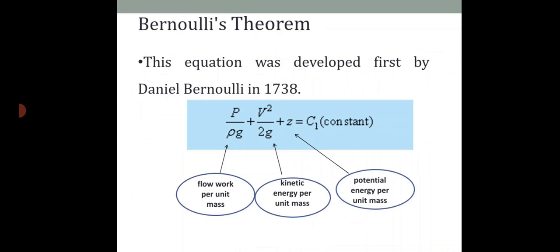Additionally, the flow should be ideal, meaning viscosity should be zero. Other assumptions include: the flow should be steady and the flow should be irrotational. These are the key assumptions upon which Bernoulli's theorem is based. This theorem was developed by Daniel Bernoulli in 1738 and is named after him.